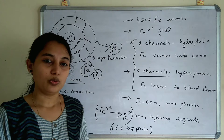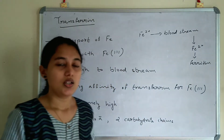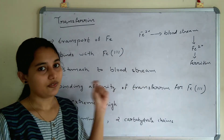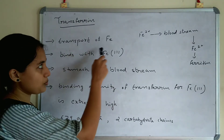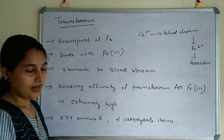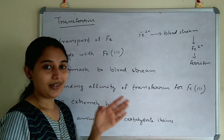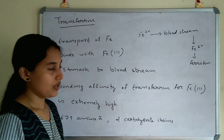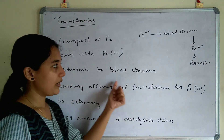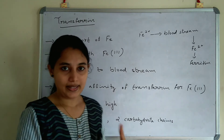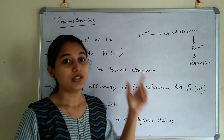This is about ferritin. Now, next we will see transferrin — the transport of iron. Transport of iron is conducted by transferrin protein. Transferrin binds with Fe3+ (plus 3 oxidation state). In both ferritin and transferrin, the iron atom is in the plus 3 oxidation state. Iron is transported from stomach to bloodstream through transferrin.